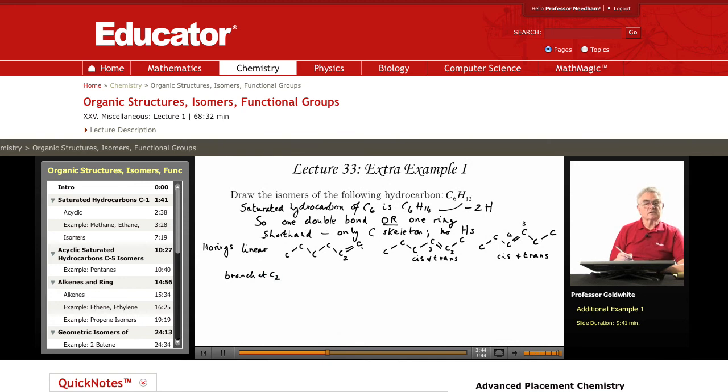Now, we begin to construct the isomers that are branched at C2. And here again, we have cis and trans possibilities.